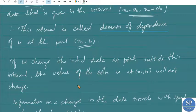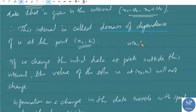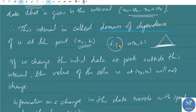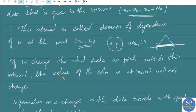If we change the initial data at points outside this interval, the value of the solution u at (x0, t0) will not change. That is, changing f and g outside the interval [x0 minus ct0, x0 plus ct0] does not affect the solution u at the point (x0, t0); it will remain the same.